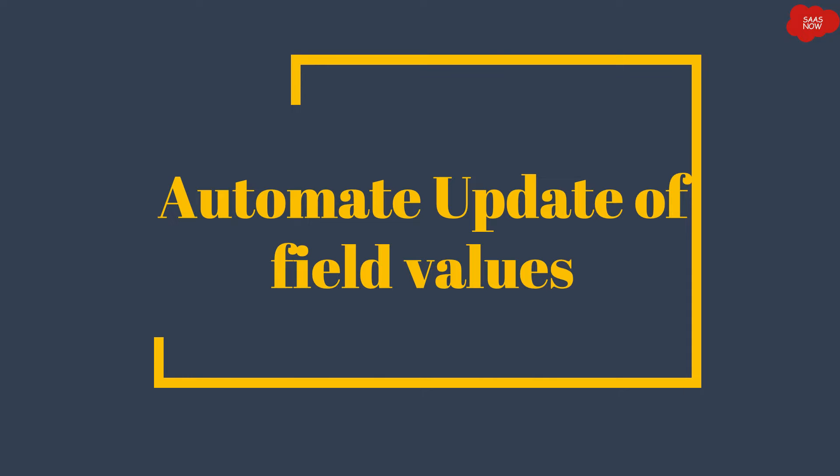Let's say a customer asks that they want to automatically update field values like status and approval status. If somebody approves a request, it should automatically change the approval status to approved, and it should also show as requested — meaning someone has requested a leave. Now, how can we fulfill this requirement? We will fulfill it with the help of Flow Designer.